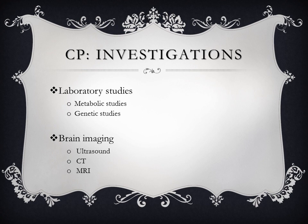Blood tests are done as deemed necessary based on clinical examination. Investigations that can be considered include thyroid function test, metabolic and genetic studies. Neuroimaging studies help evaluate brain damage. Ultrasonography can delineate gross structural abnormalities and show evidence of hemorrhage or hypoxic ischemic injury. CT scanning identifies congenital malformations, intracranial hemorrhage, and periventricular leukomalacia, but is associated with significant radiation exposure. MRI of the brain is the diagnostic neuroimaging study of choice and defines cortical and white matter structures more clearly than other modalities.